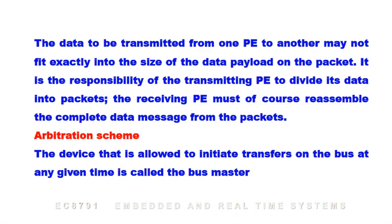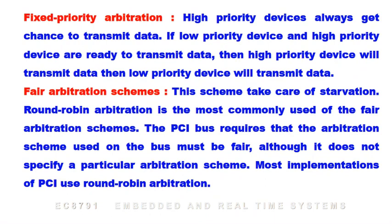The device allowed to initiate transfers on the bus at any given time is called the bus master. In fixed-priority arbitration, high-priority devices always get the chance to transmit first. If a low-priority and a high-priority device are both ready to transmit, the high-priority device transmits first, then the low-priority device. Fair arbitration schemes address the problem of starvation. Round-robin arbitration is the most commonly used fair arbitration scheme. The PCI bus requires that its arbitration scheme be fair; most PCI implementations use round-robin arbitration.